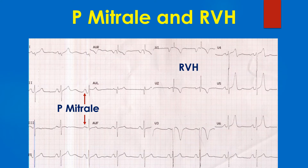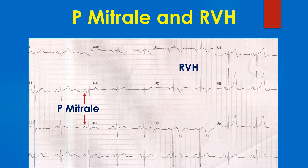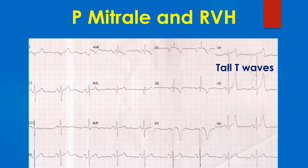A QR pattern in V1 with T wave inversion in the anterior leads is suggestive of right ventricular hypertrophy. The QRS axis appears to be in the northwest or indeterminate region, which could be a manifestation of extreme right axis deviation due to right ventricular hypertrophy as a consequence of pulmonary hypertension in severe mitral stenosis.